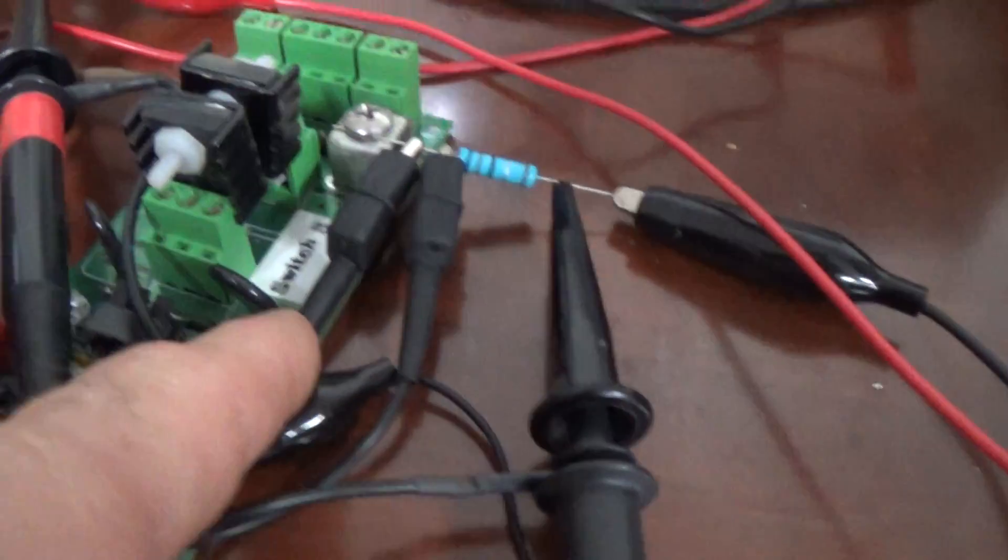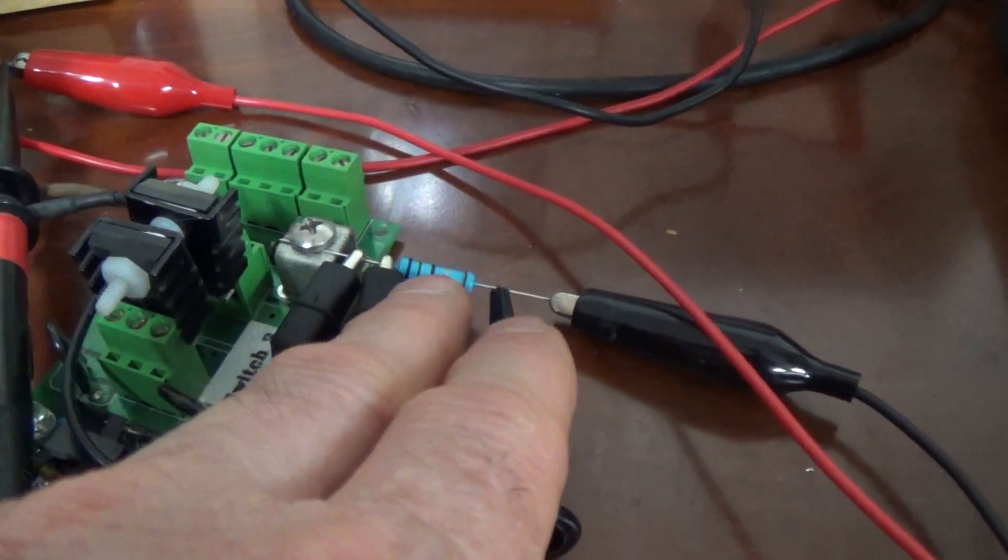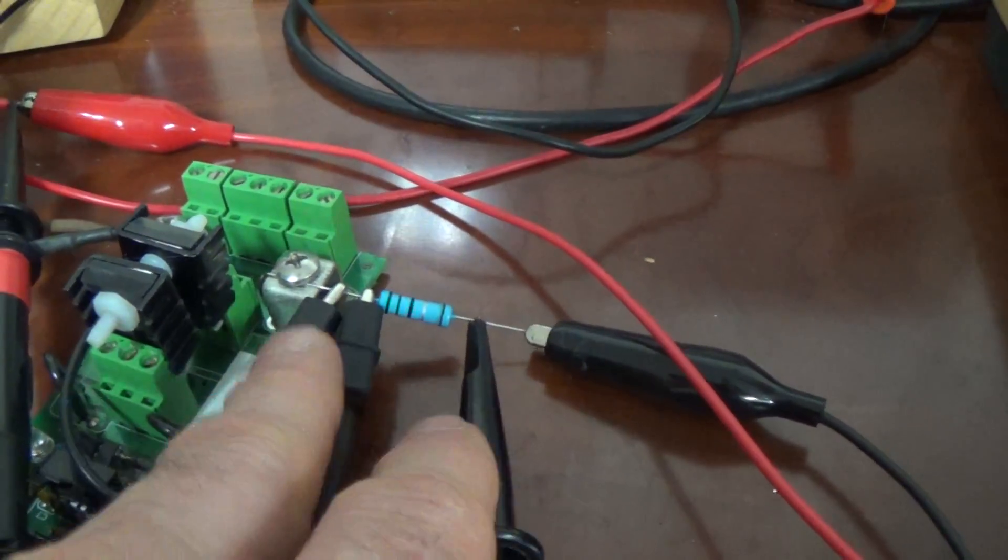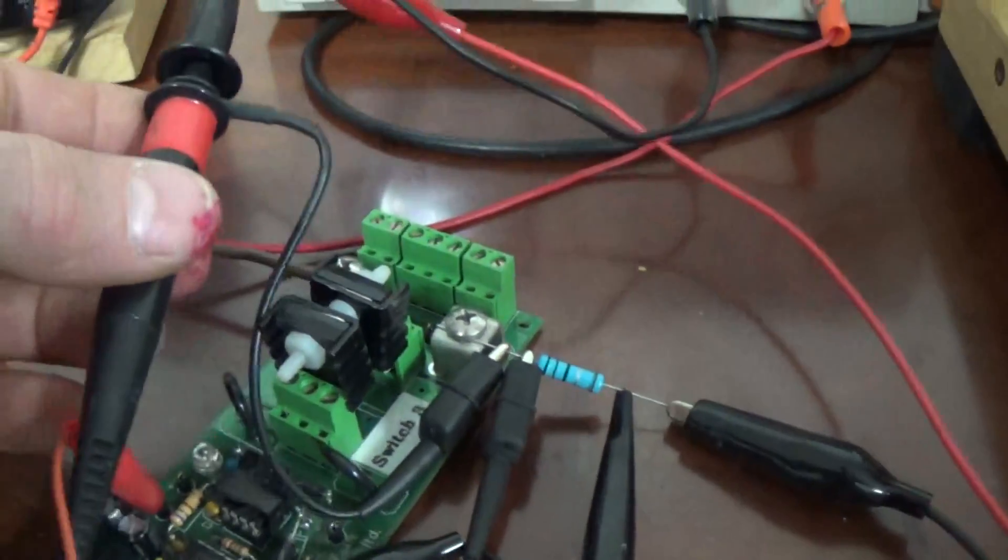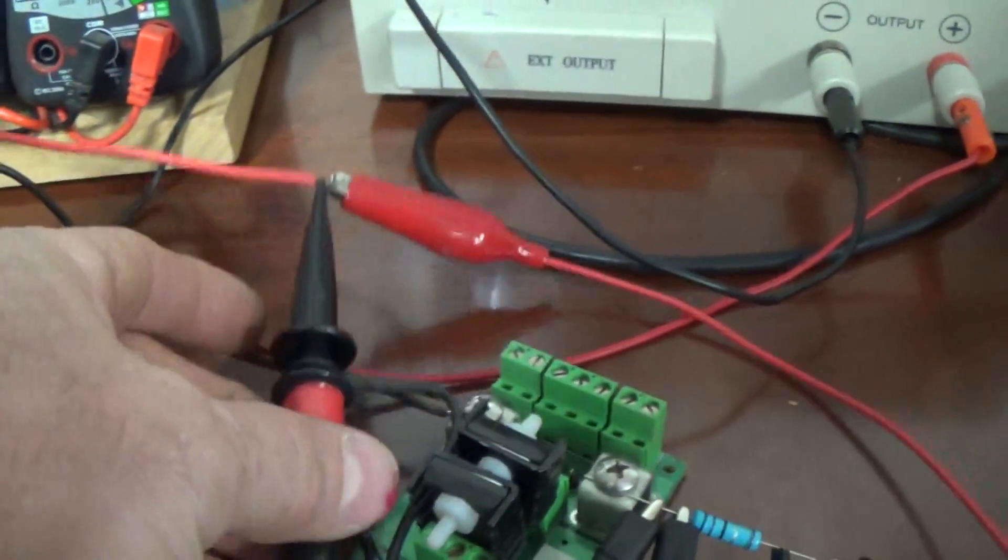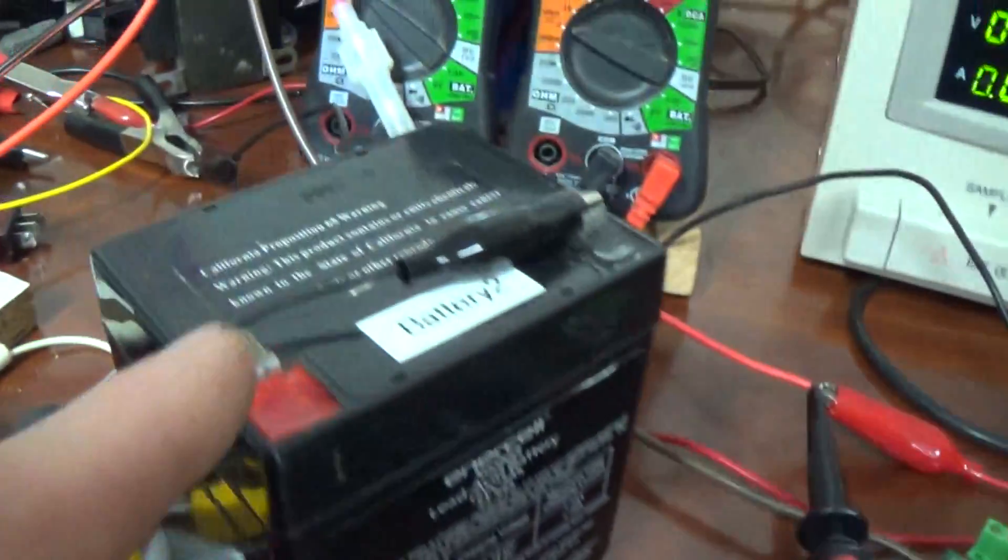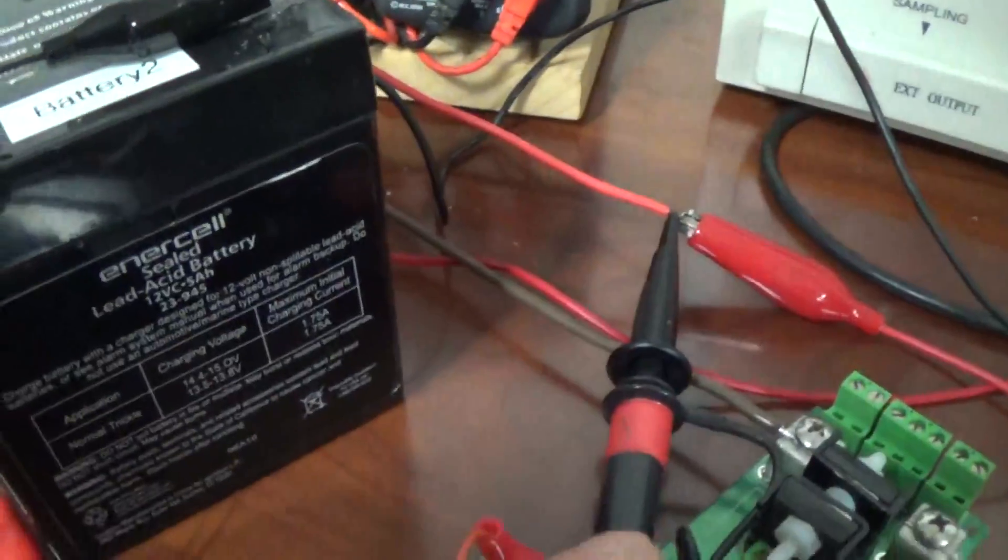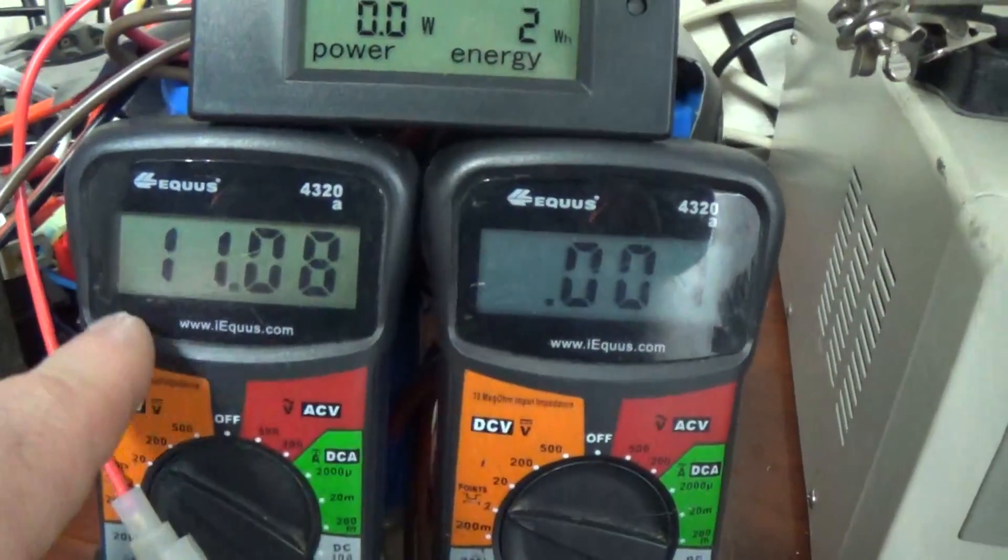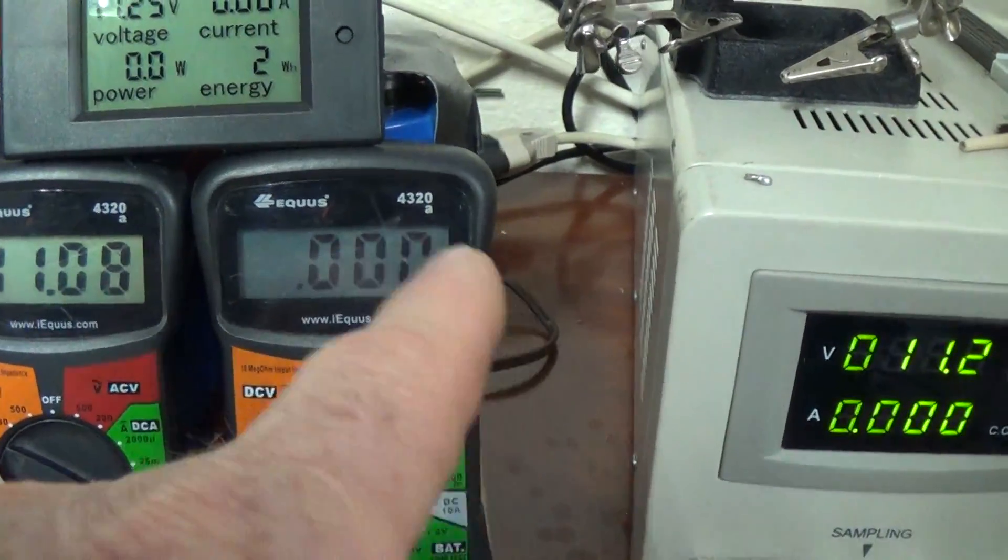And my scope probes: one of them is across the current sensing resistor here of 0.1 ohm, and that will be on the blue trace on the scope. Both grounds are located right here, and the other scope probe is on the positive here going to the coil. That's the battery to operate the circuitry. These are my meters, about 11 volts. We're going to be in the range of about 150 milliamps.